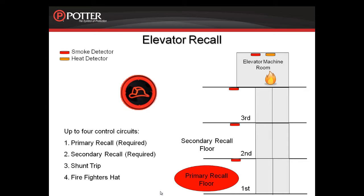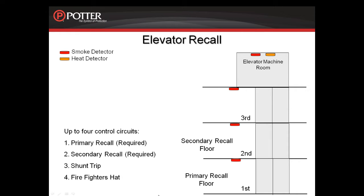In the event that the smoke detector in the elevator machine room activates, we will activate the fire hat in the elevator car by triggering that relay. This particular example pertains to elevator recall for one to three floors, one to five floors, or however many floors. The things to know are your primary floor of egress, the secondary floor of egress, and how many relays are going to be required for your particular job.